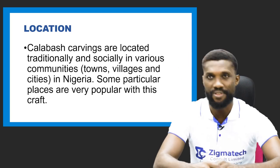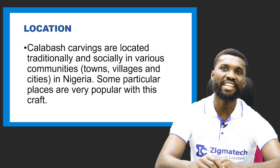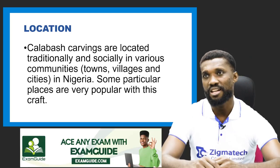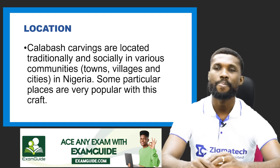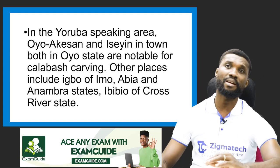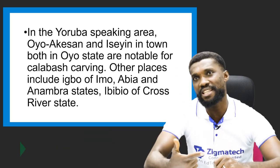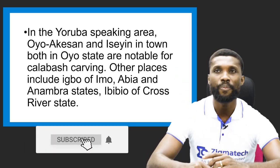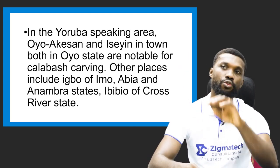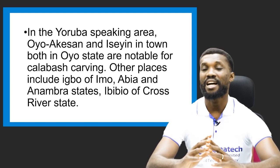What is the location — where is this calabash found? Calabash carvings are located traditionally and socially in various communities, towns, villages, and cities in Nigeria. Some particular places that are very popular with this craft include the Yoruba-speaking areas — for example, Oyo in Akanshan and the Sheyi town, both in Oyo State — notable for calabash and calabash carving.